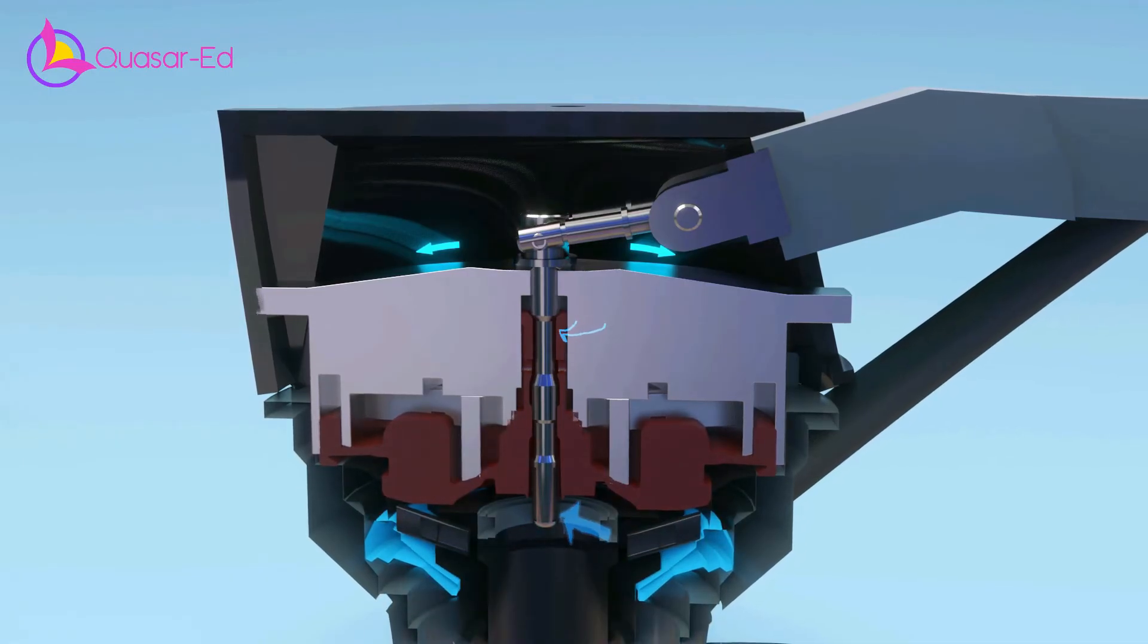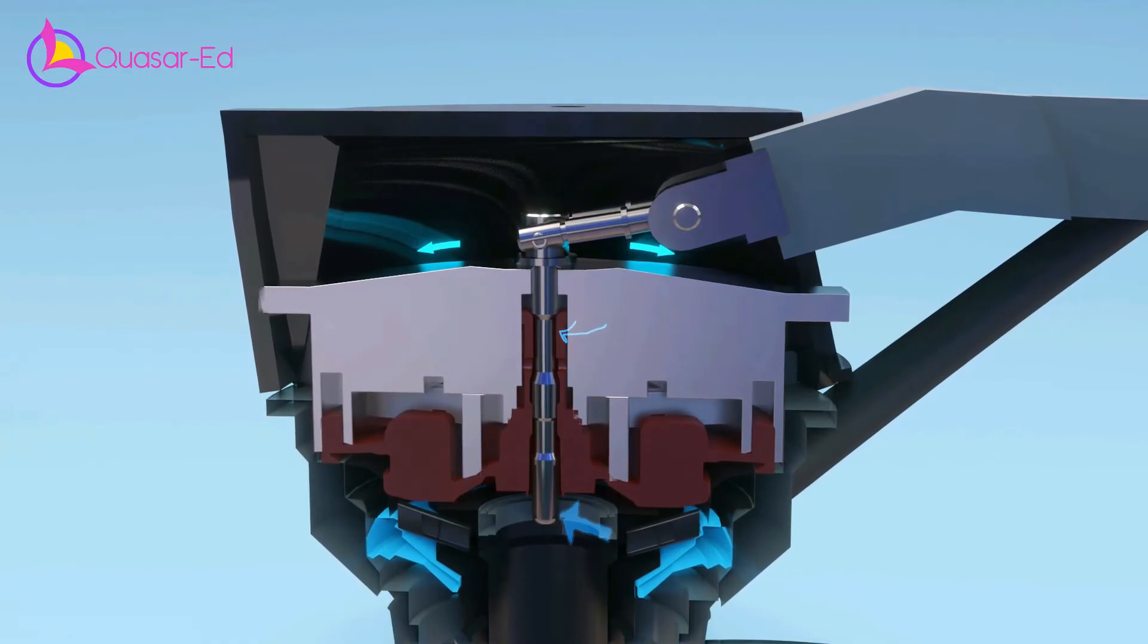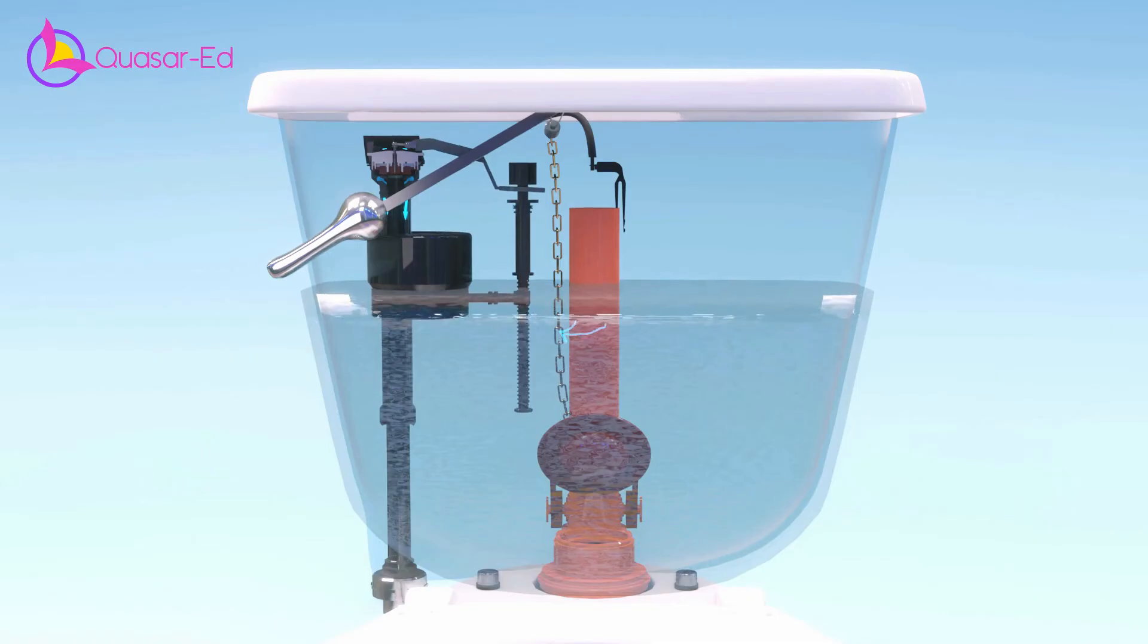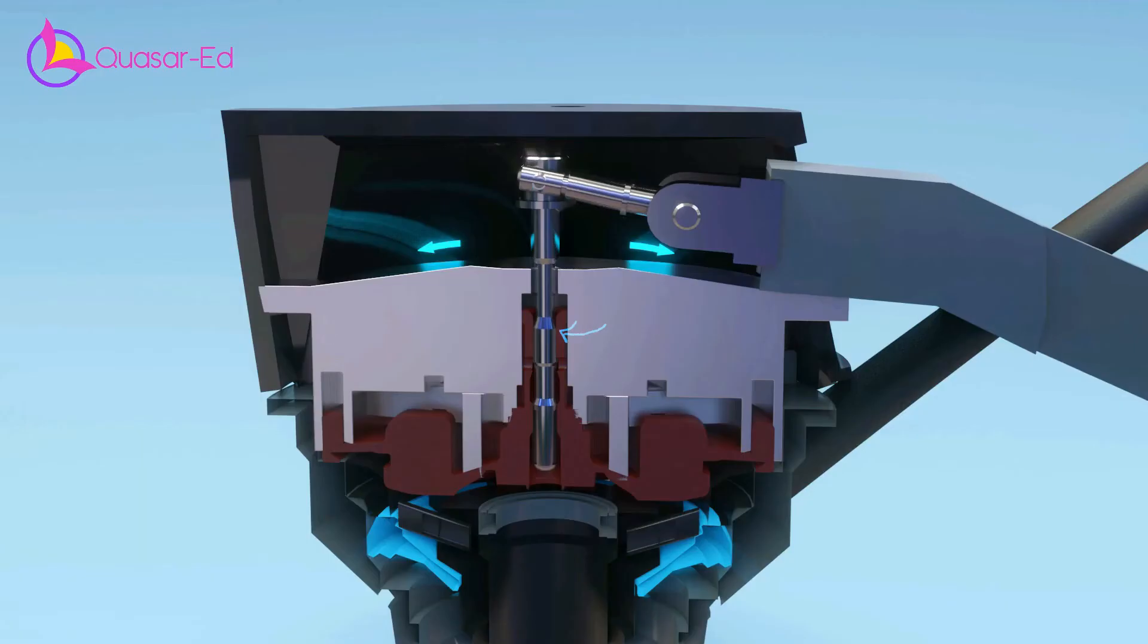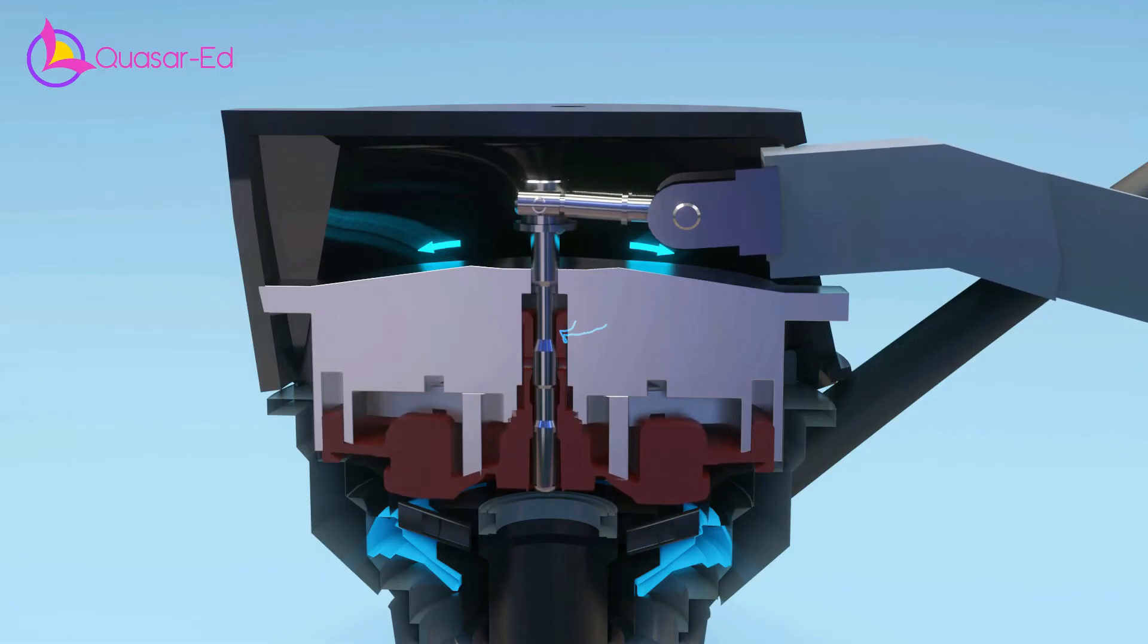At this stage, steel pin is blocking the water from entering inside the diaphragm. When the water level inside the tank increases, the float moves upwards and pushing the steel pin downwards.